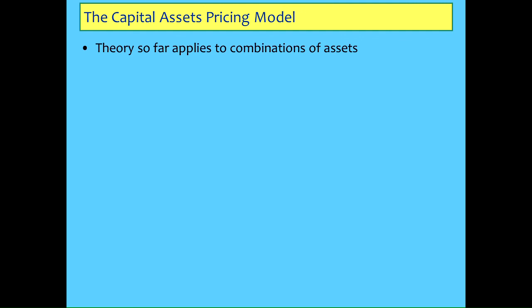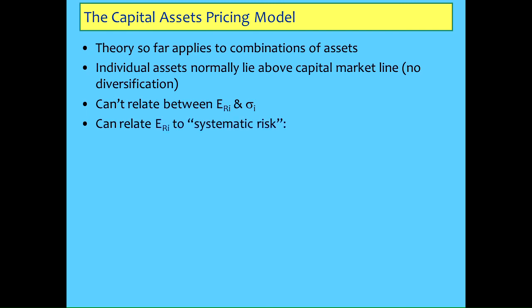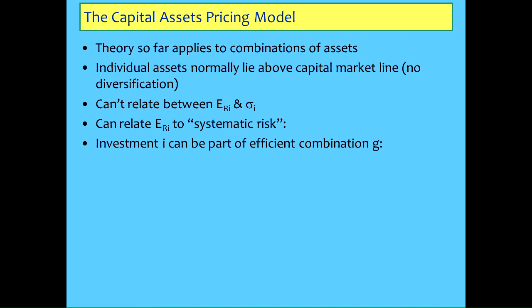We got to this stage where the theory only applies to combinations, to portfolios. We're talking about stuff on that efficient frontier and individual assets are going to lie above it - they're going to have a higher level of risk. What Sharpe next did was say we can relate the degree of return for an individual asset to the systematic risk, because the investment you're looking at - investment I - can be part of another portfolio G. So imagine I is IBM and G is a portfolio containing IBM, CSR and BHP.